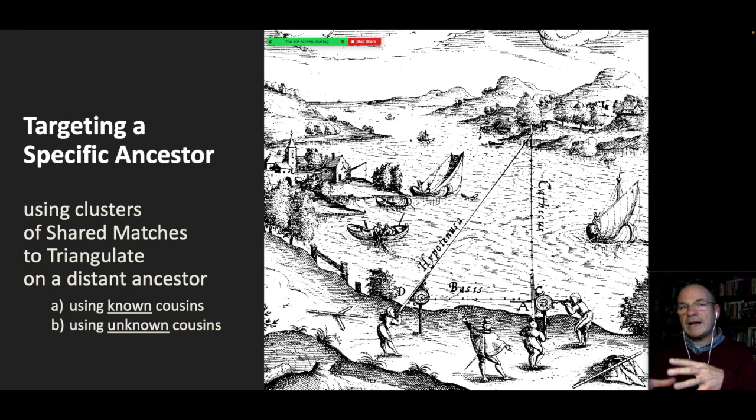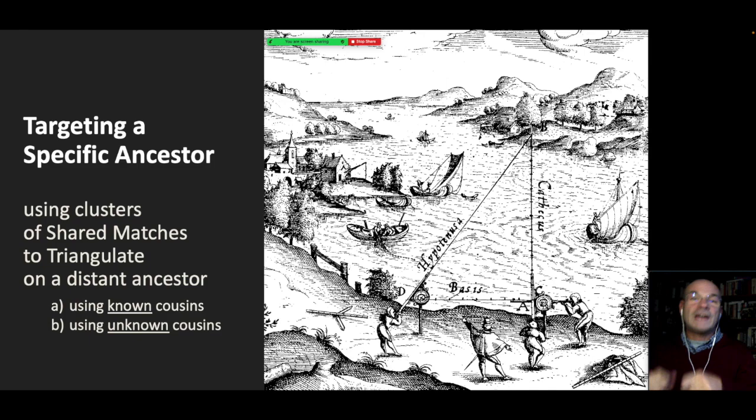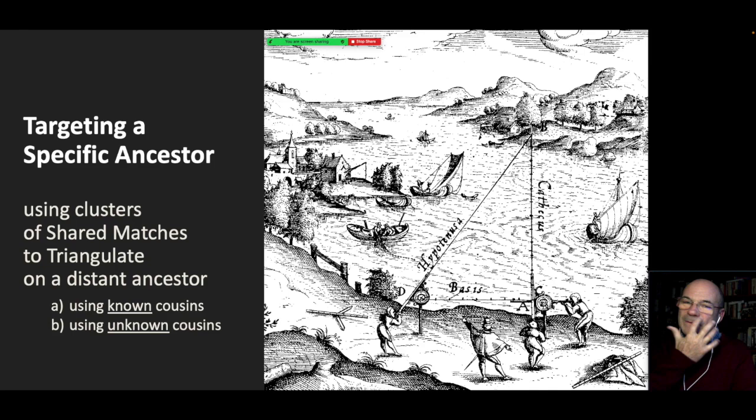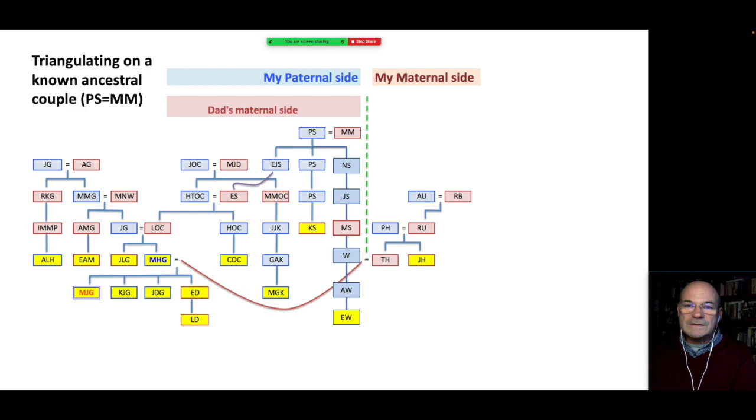The other way that you can use DNA to break through an Irish brick wall is to use clusters and triangulate on a specific set of Irish ancestors that you are having trouble with. I spoke about this in one of my earlier presentations at length, so I'm just going to run through it very quickly now. The idea here is that you build clusters of shared matches and triangulate on a known distant ancestor.